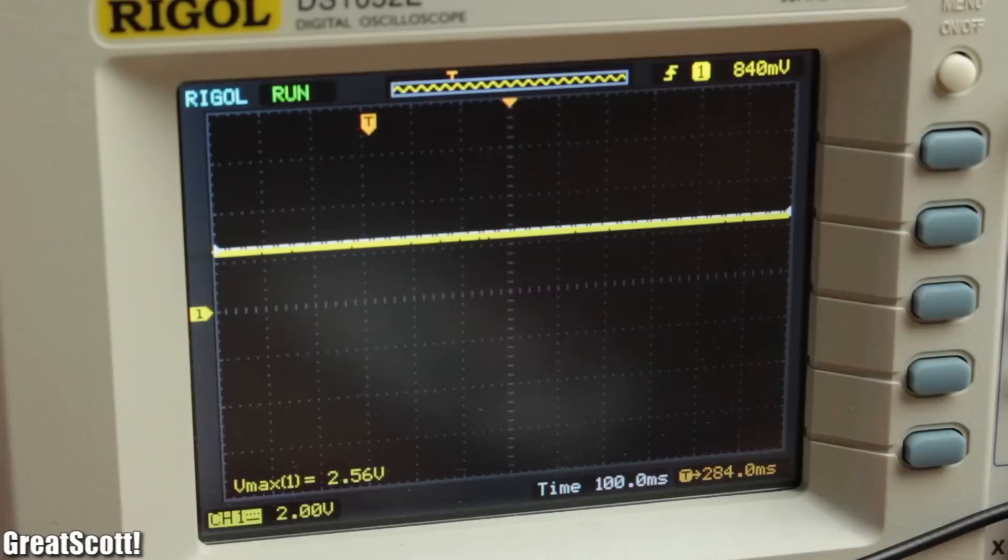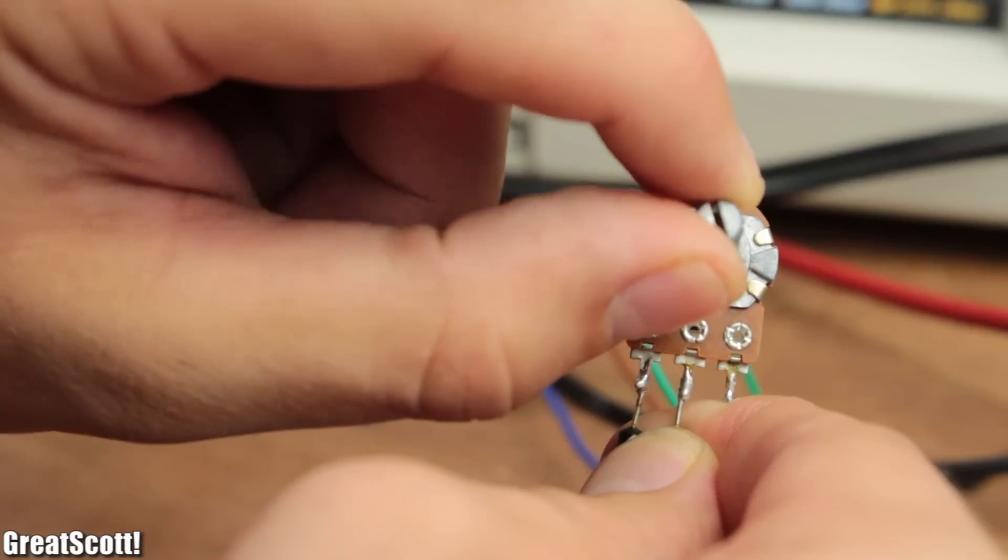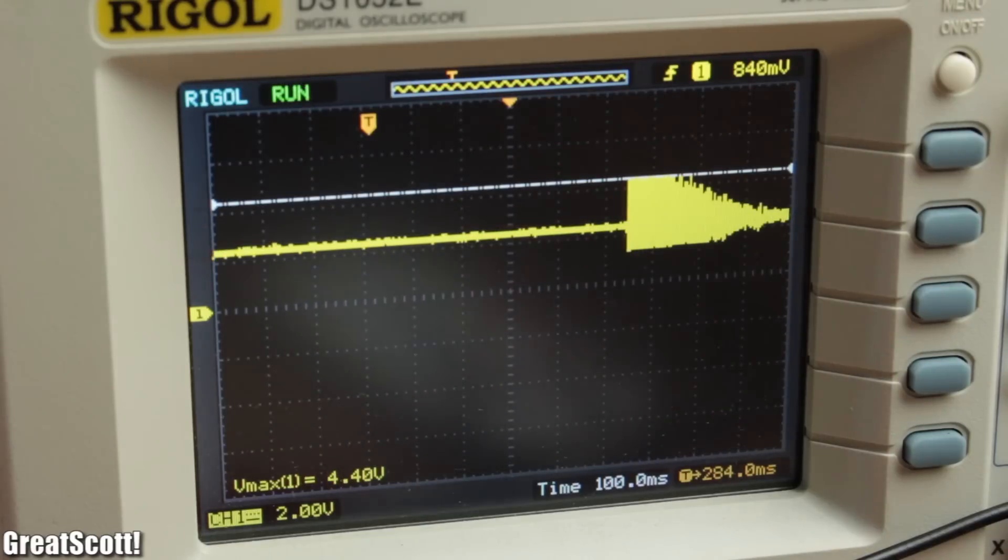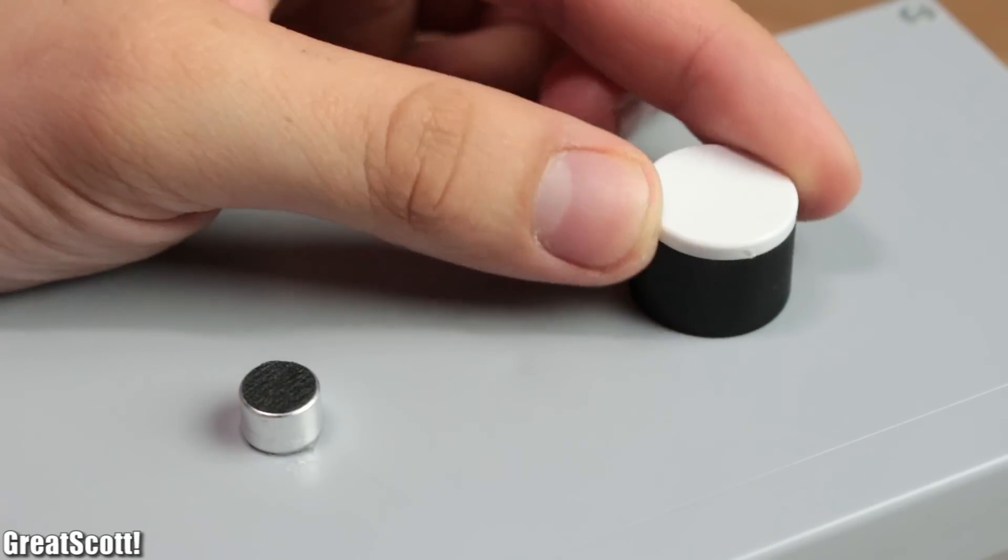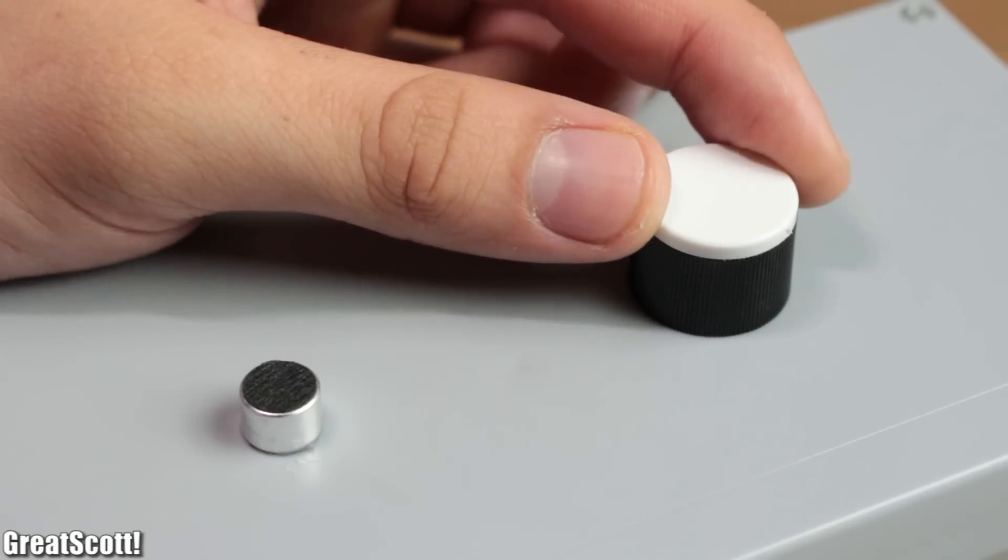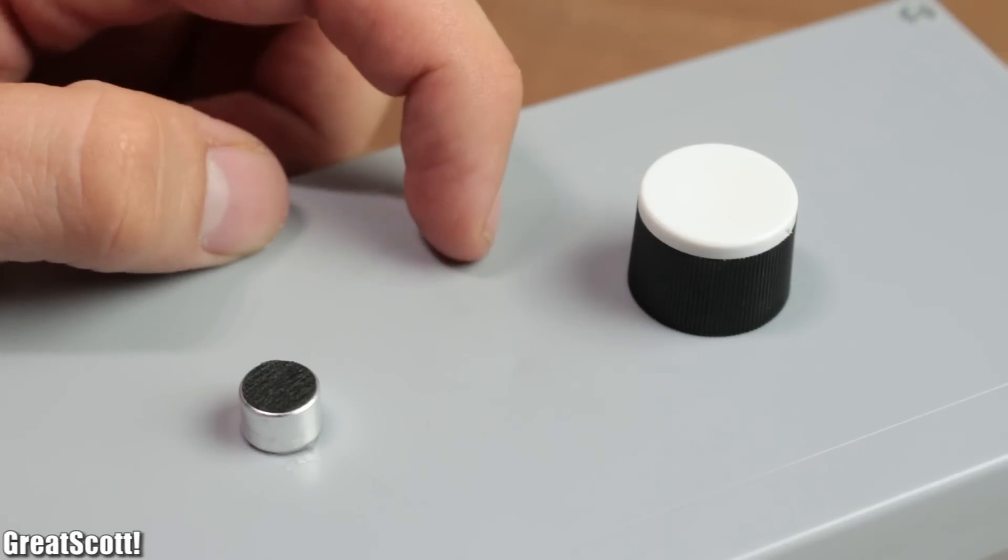And by changing the resistance of the potentiometer closer to 0 ohms, the amplification increases. We can use this later to adjust the sensitivity of the circuit depending on how far you position it away from your claps.